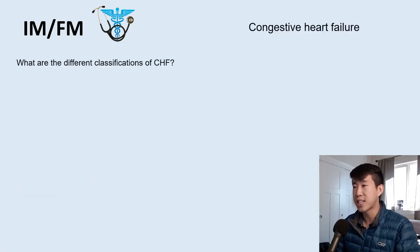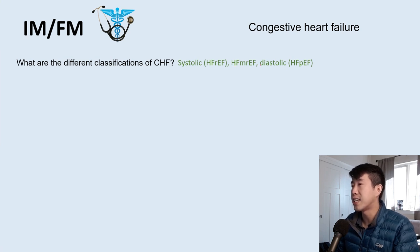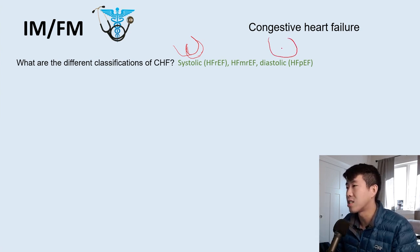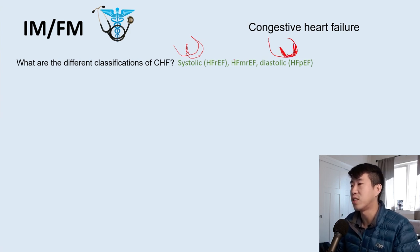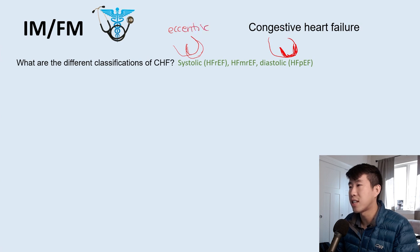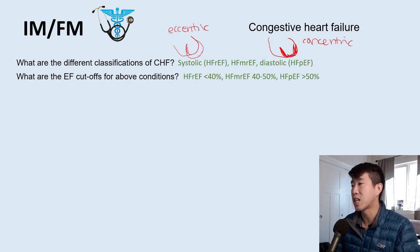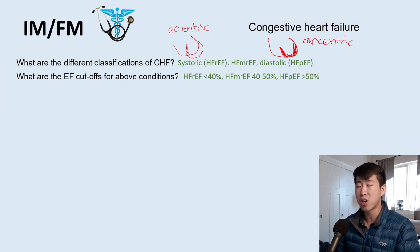Moving on to congestive heart failure. Classifications of CHF: systolic heart failure (heart failure with reduced ejection fraction), heart failure with moderately reduced ejection fraction, and diastolic heart failure (preserved ejection fraction). Systolic involves eccentric hypertrophy — a thin, weak, ballooning left ventricle that doesn't contract well. Diastolic involves concentric hypertrophy — a hypertrophied, stiff left ventricle that's difficult to fill. EF cutoffs: systolic HF is EF less than 40%; moderately reduced EF is 40–50%; preserved EF is greater than 50%.